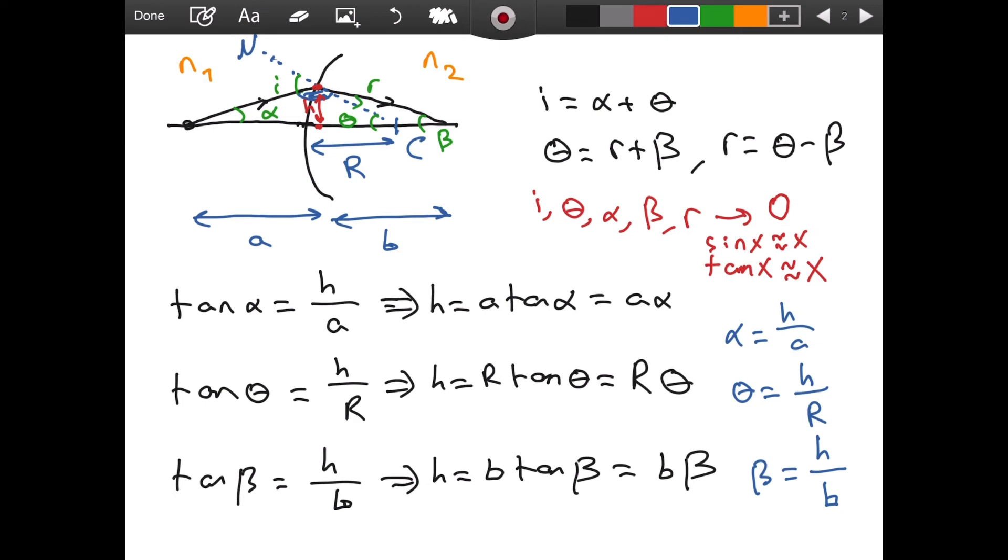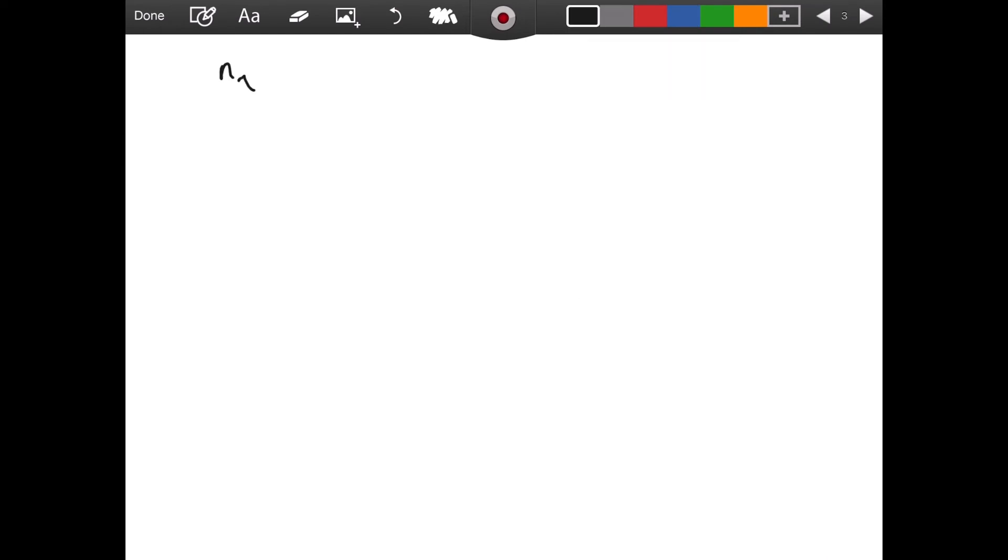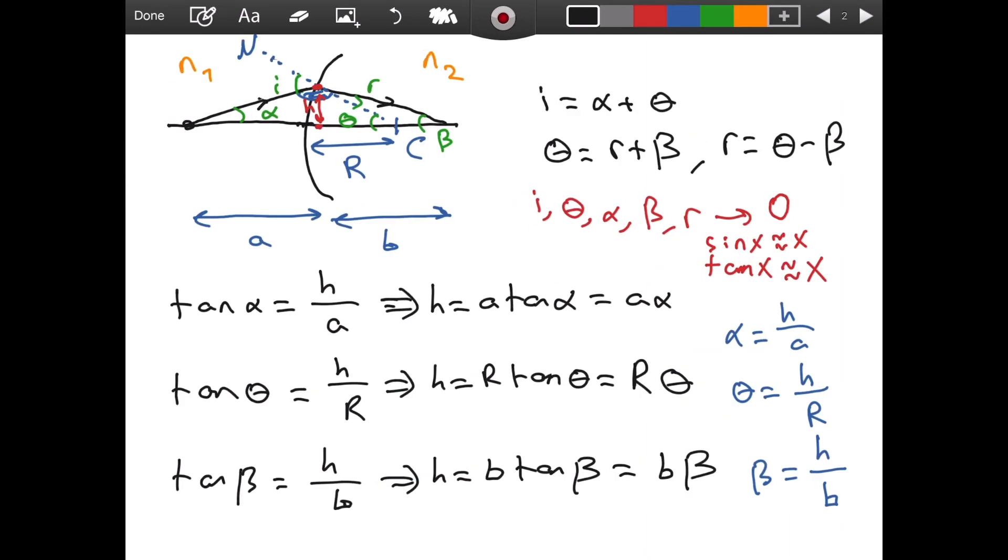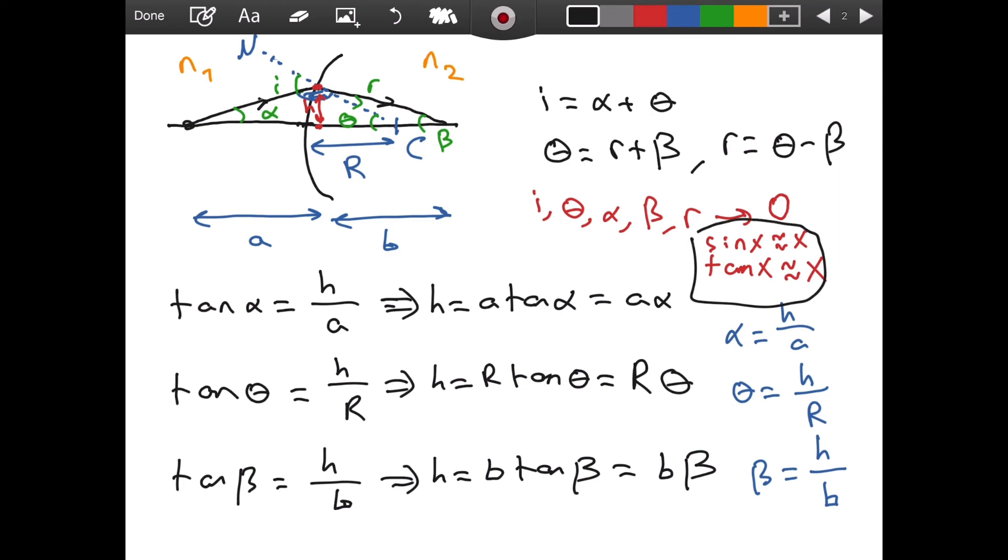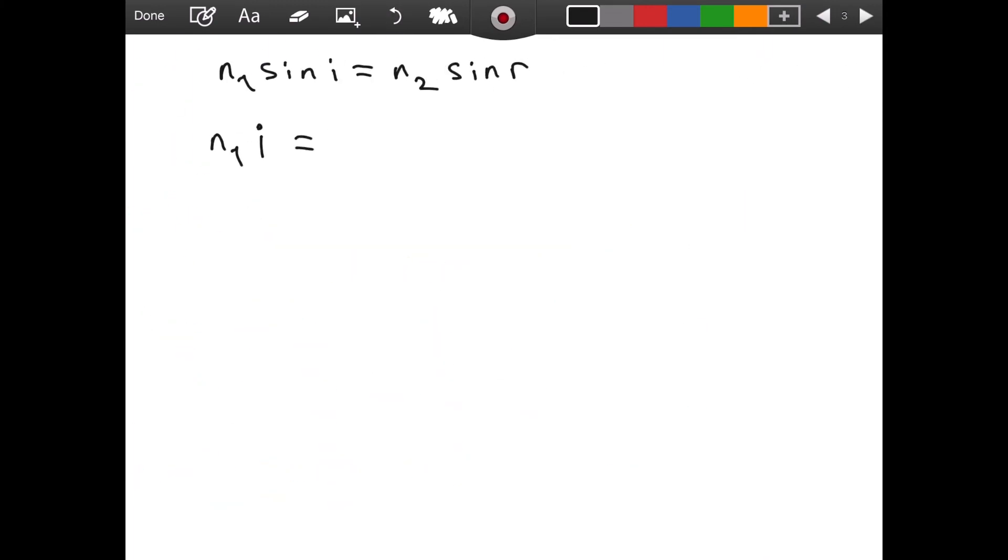But how does this help us? Well, this helps us because we have a very powerful formula left that we can use. We are going to use Snell's law. Snell's law states that n1 times sine i is equal to n2 times sine r. And you can find the derivation of this video in the cards right now. I have a video about it. It is a very powerful formula that we will use. So what we can do is, we have n1. And for sine i, we can substitute i.